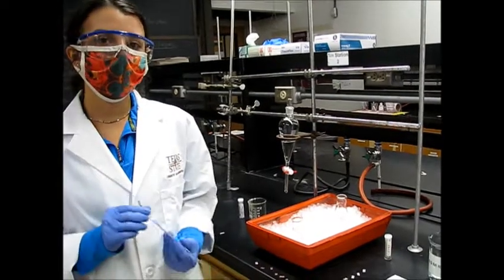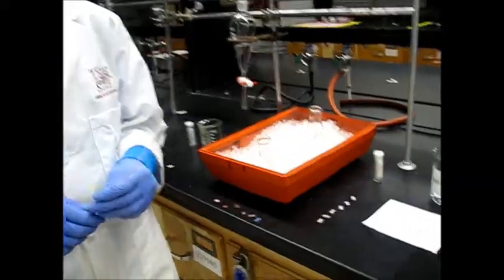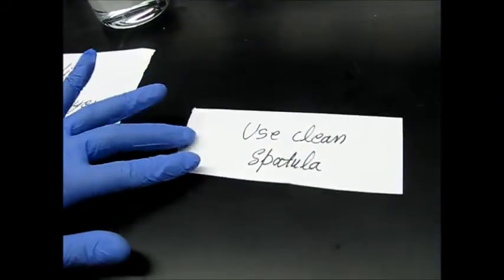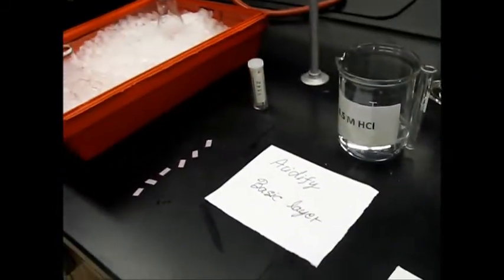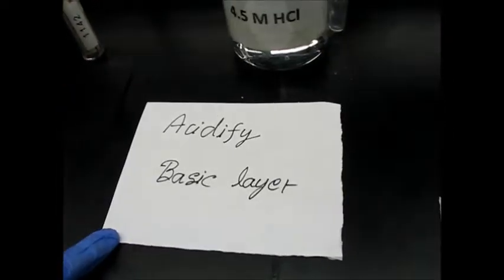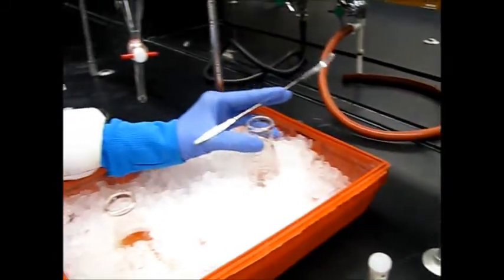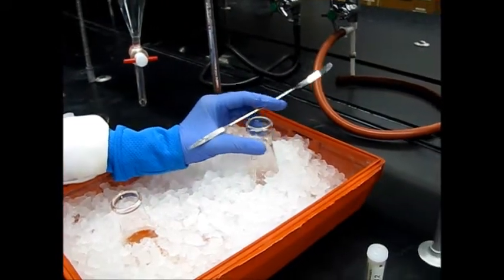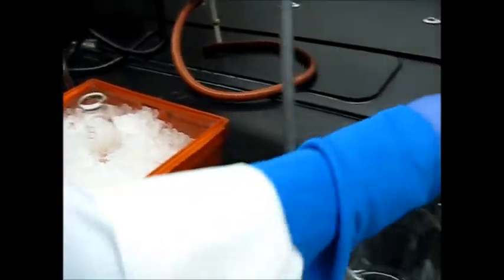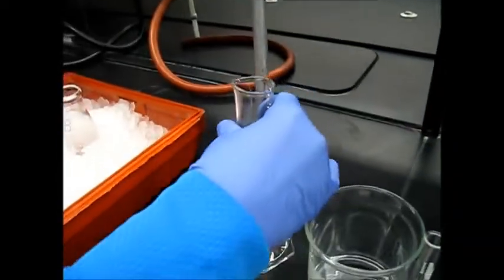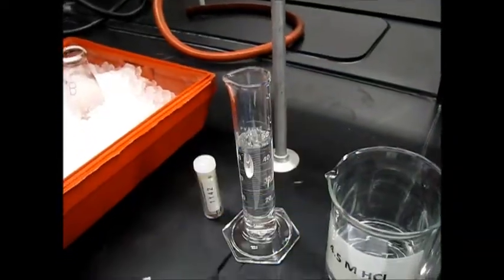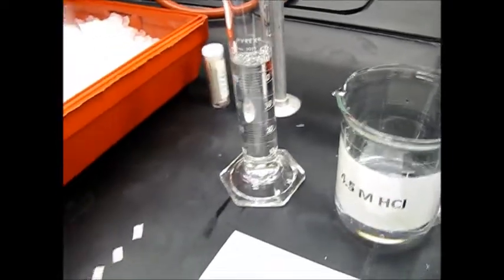Make sure that you always clean the spatula between compounds because you don't want to contaminate your other solutions. Now we will move on to acidify the basic layer. Our basic layer is labeled B here in the back of the ice tray. I have weighed out approximately 45 to 50 milliliters of 4.5 molar HCl and I have cut up a litmus paper so I can test it along the way.